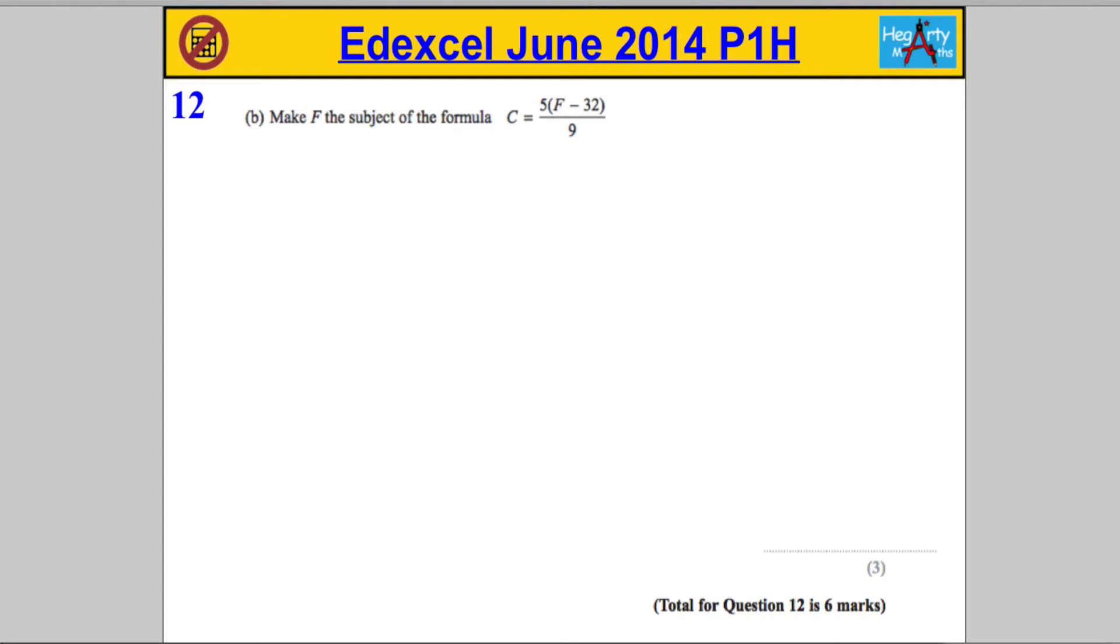The second part of the question asks us to make F the subject of the formula. So in other words, I need to make F on its own on the left-hand side and everything else on the right-hand side. Now, there are lots of different ways of doing this.